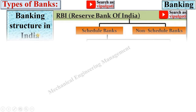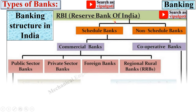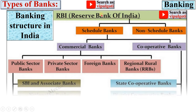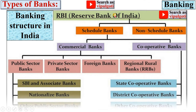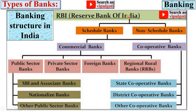Let's see the banking structure in India. In this structure, at the apex position there is the RBI, that means Reserve Bank of India, which is the Central Bank of India. It has the highest authority in the banking structure. There are two types of banks under the RBI: Scheduled Banks and Non-Scheduled Banks.